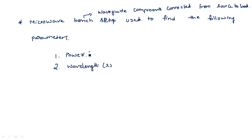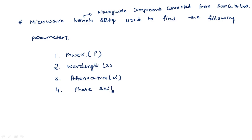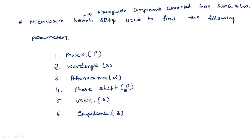We can calculate wavelength (lambda), power (P), frequency, and attenuation (alpha). We can also measure phase shift and VSWR. Impedance measurement is also possible. Phase shift is denoted as beta. These are the various parameters we can calculate using the complete bench setup.